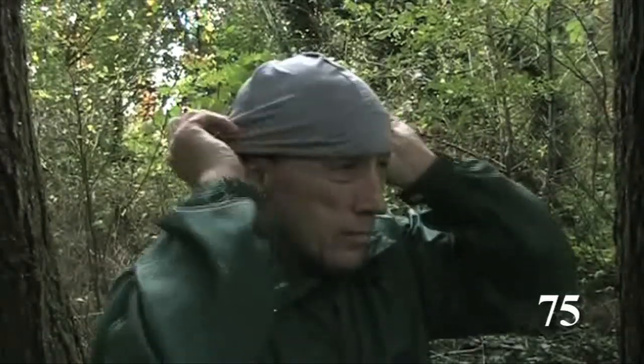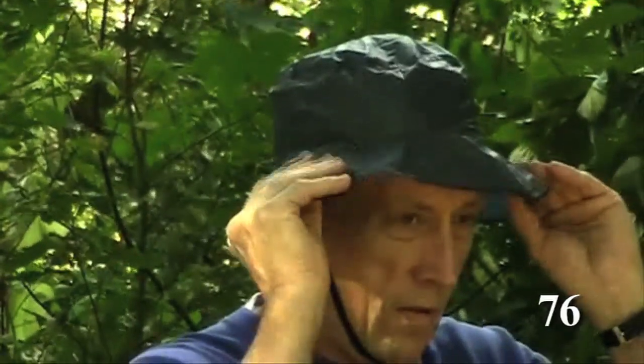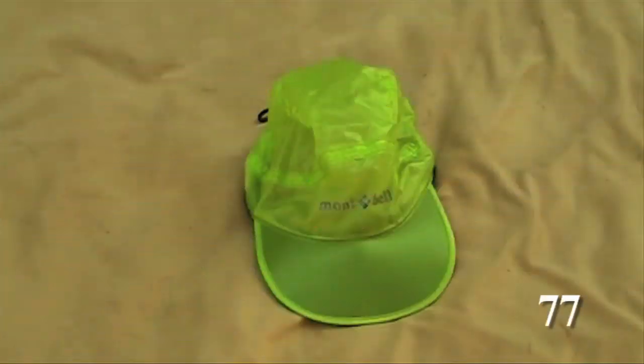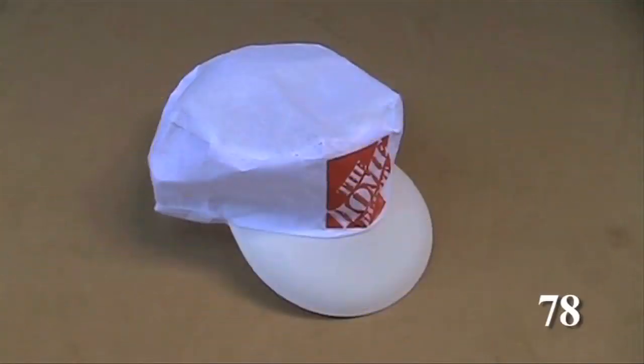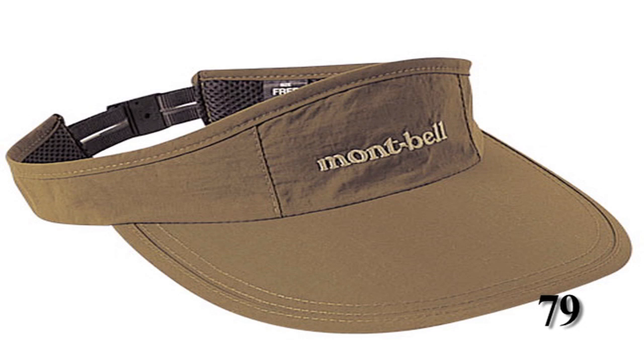A lightweight skull cap can weigh as little as an ounce, and it's great for sleeping. A full brimmed silicone coated nylon hat can weigh as little as 1.2 ounces. A baseball type hat of silicone coated nylon can weigh less than an ounce. A painter's cap will give you cheap light sun protection for less than an ounce. If a hat is too hot use an ultralight visor.